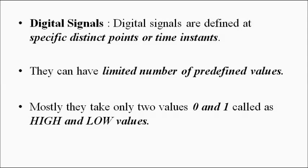In negative logic, the opposite is taken, but that is a separate discussion for digital logic circuits. So basically, the characteristic of a digital signal is that it exists for a certain duration, has fixed predefined voltage levels assigned to it, and can only take one of those multiple pre-assigned voltage levels. Mostly in data communication, the two-bit format — 0 and 1 — is used.